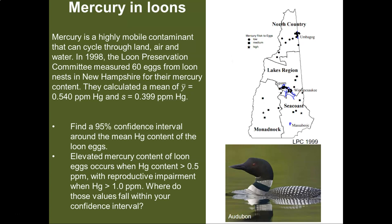Now we're going to look at and do some calculations for this example with mercury in loons. As it turns out, mercury is a pretty highly mobile contaminant that can cycle through land, air, and water. And really, loons are very susceptible to high levels of mercury and it gets into their eggs.